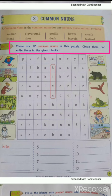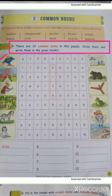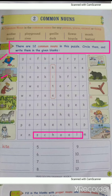The first word is kite. The spelling of kite is k-i-t-e. The second picture is school. The spelling of school is s-c-h-o-o-l. Search that spelling in the puzzle and write it on the second line.